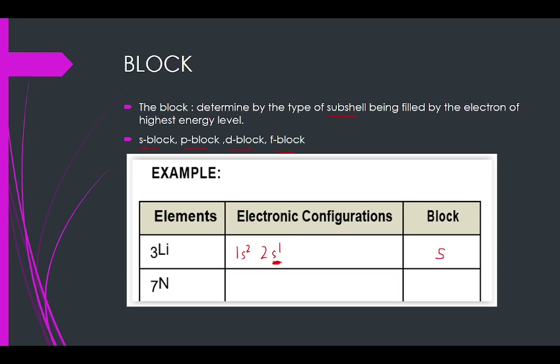For nitrogen, there are 7 electrons because there are 7 protons — in a neutral atom the number of protons equals the number of electrons. So: 1s2, 2s2, 2p3. That is 3 plus 2 plus 2 equals 7. Since the electronic configuration ends in P, this is P block.